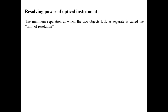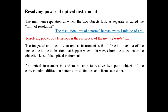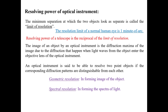Now, talking about the resolving power of optical instruments, we must first discuss the limit of resolution. The minimum separation at which two objects appear separate is called the limit of resolution of an optical instrument, and the resolution limit of our eyes is 1 arc minute. Resolving power is the reciprocal of the limit of resolution — more is the limit of resolution, less will be the resolving power. The image formed by an optical instrument is the diffraction maxima of the object, and an instrument can resolve two point objects if their diffraction patterns are distinguishable. Resolution can be divided into two classes.